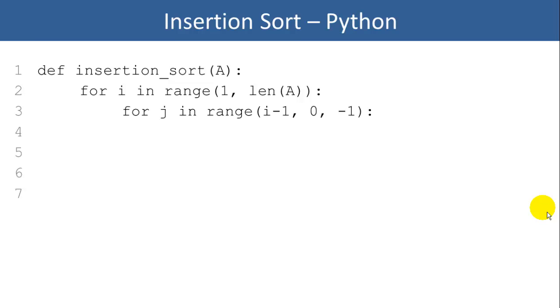And then we'll have an inner loop variable that covers from I minus 1. We want to loop through all the items to I's left. So we'll start from the item to I's immediate left and work our way to 0, the first item in the list, with a step of negative 1. That means we want to move left through the list.